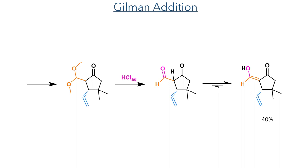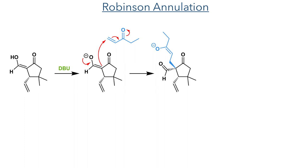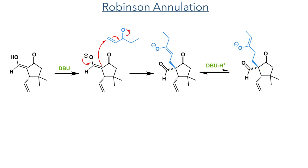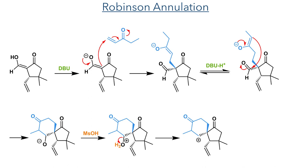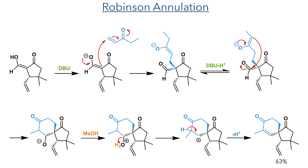This then took part in a Robinson annulation. Deprotonation by DBU generates an enolate that then undergoes conjugate addition to methyl vinyl ketone. The enolate formed by this addition can then undergo a tautomerisation that leaves a double bond on the other side of the oxygen. It is this tautomer that can undergo a cyclisation to form the six-membered ring, as favoured by Baldwin's rules. This then undergoes protonation by methane sulfonic acid, first generating the alcohol and then protonating it once again, allowing it to be eliminated as water to generate a carbocation. The alpha proton is then eliminated to regenerate an equivalent of acid and form the desired enone, with an overall yield of 63%.